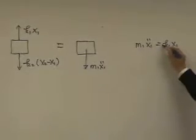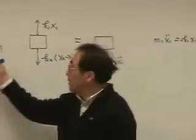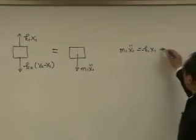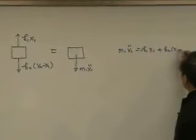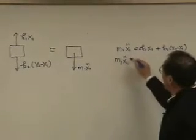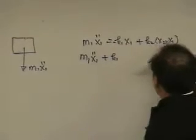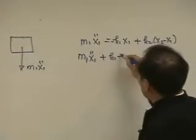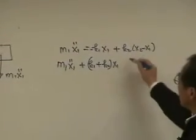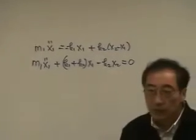M1X1 double dot has to be equal to minus K1X1, because the direction of this force is negative direction of X1T as defined. And then we have plus K2(X2 minus X1). Therefore, we can write this equation as M1X1 double dot plus K1X1 plus K2X1, and then we have minus K2X2 equal to zero.